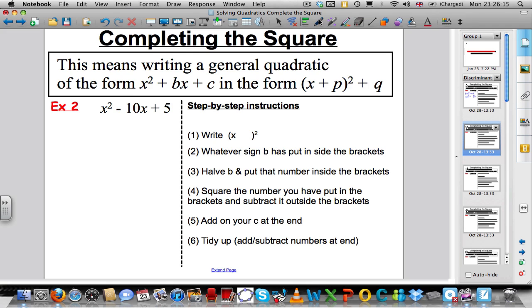x² - 10x + 5. We want it in the form (x + something)² plus another number. You want to put the x in brackets so that it's squared. Whatever the sign of the b is, you put it in the brackets. Whatever the number b is, it's 10 here, you half it and you write it inside. Then you work out this number, 5², and you subtract that answer. So 5² is 25, so you subtract 25. Finally, you add on your +5 that was left over here. Tidy up now. So you have (x - 5)² - 25 + 5 is -20.